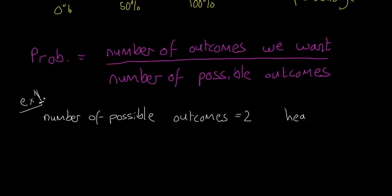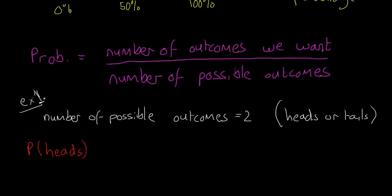If someone asks what is P of heads — that notation means what's the probability of getting heads — we use the formula. The number of outcomes we want is one, because there's only one outcome where we get heads. The number of possible outcomes is two. So the probability of getting heads is one half.